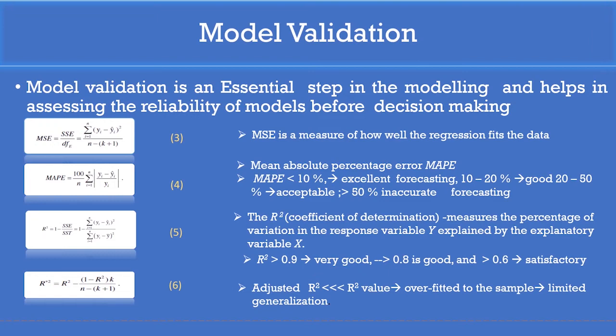Another important parameter to evaluate the reliability of the model is coefficient of determination, also called R square. The R square measures the percentage of variation in the response variable y with respect to the explanatory variable x. The R square value indicates on what degree the predicted value changes with respect to the changes of x.